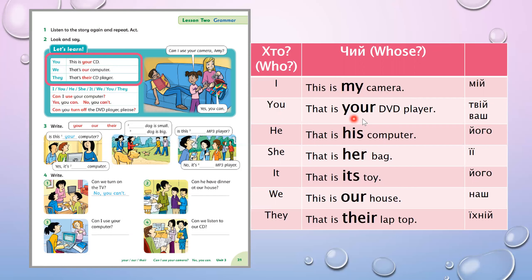You — that is your DVD player. 'You' in English has two meanings: ти або ви, so the possessive pronoun is also 'your'. He — that is his computer — це його комп'ютер. She — that is her bag — це її сумка. It — that is its toy — це його іграшка, meaning an animal's toy. We use 'it' when talking about animals. We — this is our house — це наш будинок.